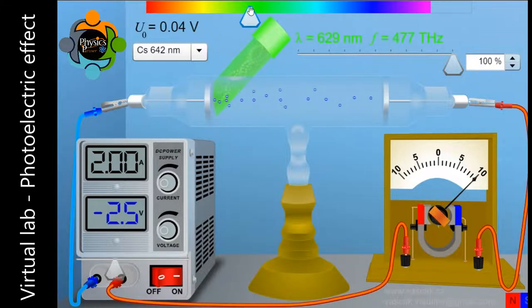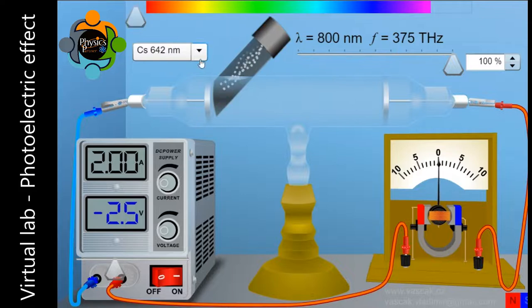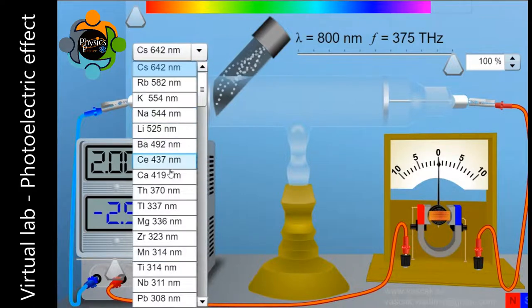You can see the voltage is produced here. Let's change the material and try other materials with higher threshold. Just remember that with the green light with the frequency of 477 terahertz, photoelectric effect is started. Let me try another material with higher threshold. So let's take sodium.